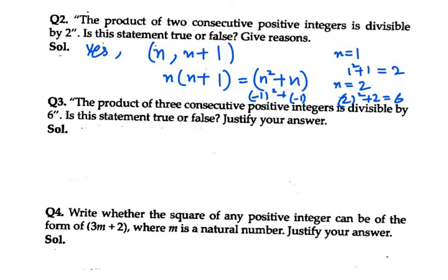That's your answer for question 2. Moving on to question 3: the product of 3 consecutive integers is divisible by 6. Is this statement true or false? Justify your answer.